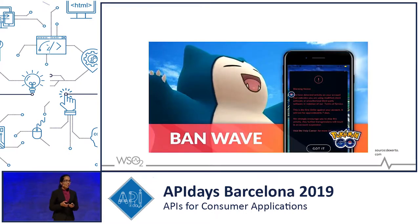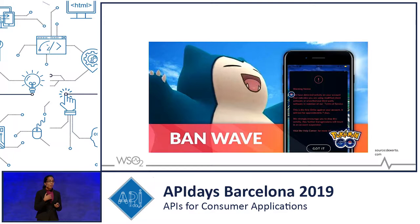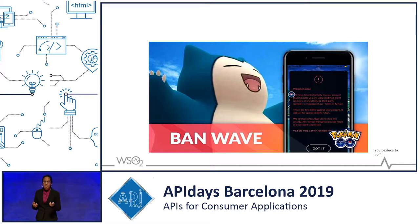The next patch Niantic released came with a legal warning, sent out to some players in the community saying they had detected unauthorized third-party application usage and recommended they stop. If they continued, accounts would be suspended — and they really did suspend some accounts in the community.